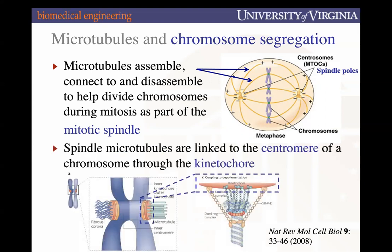The plus end that's polymerizing and growing out binds to a region of the chromosome called the centromere — the central region. The particular part it connects to is called the kinetochore, a large macromolecular protein structure that the plus end will bind to. It's almost like a force-sensitive process by which as it anchors onto the kinetochore, it literally pulls apart the chromosomes during mitosis. If there's a defect in microtubule polymerization or tubulin formation, this has dramatic effects on mitosis and chromosome segregation.